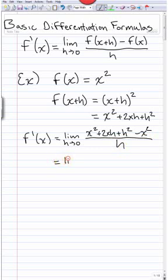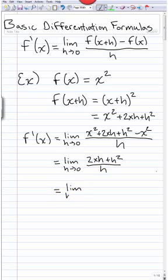We need to simplify to compute this limit. The x² terms subtract off from each other, so we get 2xh + h² over h, and then we need to get rid of this h — it divides into each term. So this equals the limit as h→0 of 2x + h, and then plugging in h=0 gives us 2x.